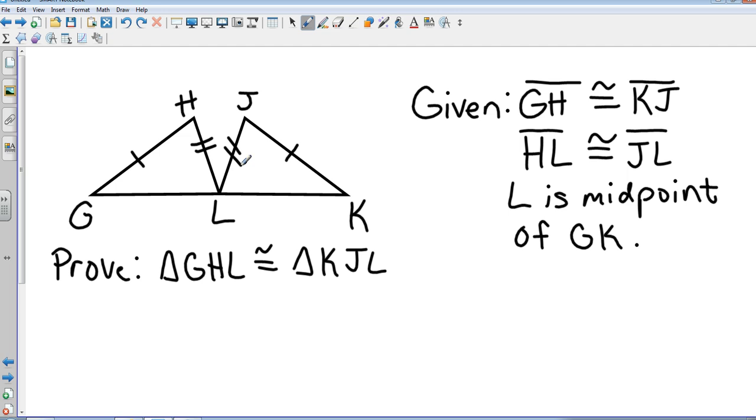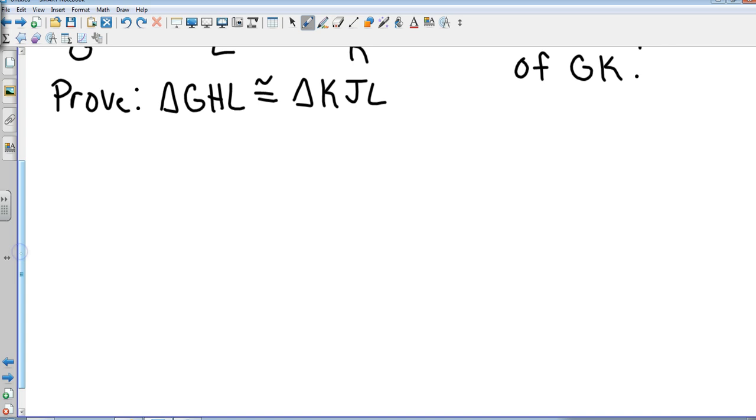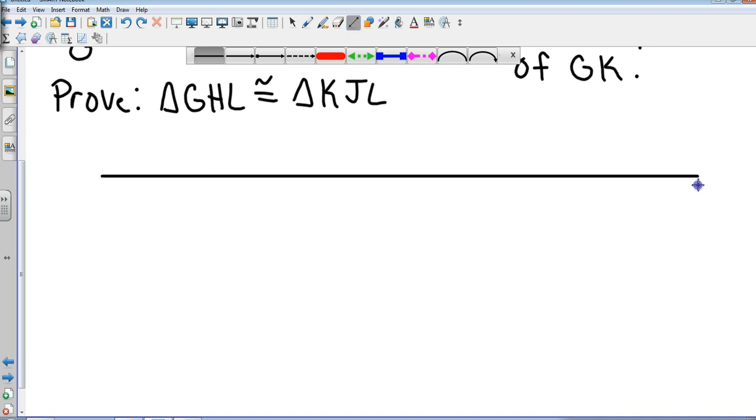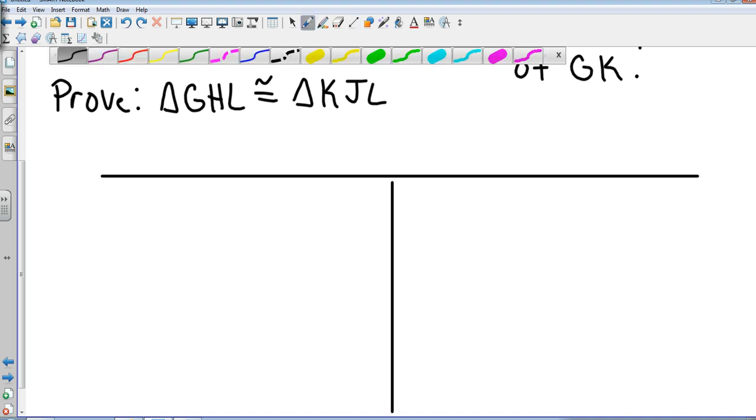Now, for those of you weary of a proof, they've already proved it for us. We just have to write it out. They've told us L is the midpoint of GK, which means that GL is congruent to LK. Now we just have to write a statement stating that. We're going to do a two-column proof.